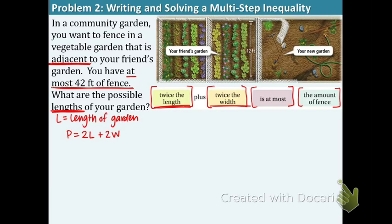So we have that right here, twice the length, twice the width is at most the amount of fence. So now we're going to do 2L plus 2W is at most less than or equal to 42. Now there's one other given information that we didn't get in the words, but we actually got in the picture.